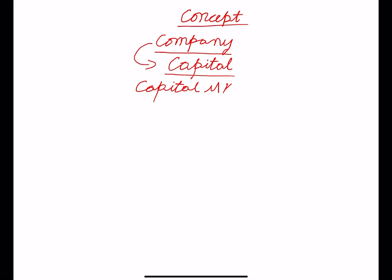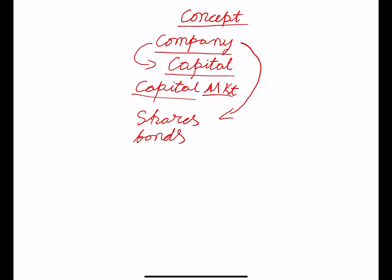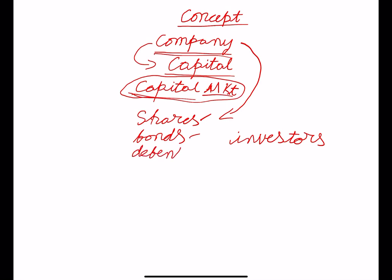A company requires capital — it is like a lifeblood. How can a company raise capital? It can raise capital from the capital market. Who will subscribe the shares or debentures? The company raises shares, bonds, or debentures from the capital market. Investors, who are interested to invest in the company, will subscribe. I think you are aware about the difference between bonds, shares, and debentures.